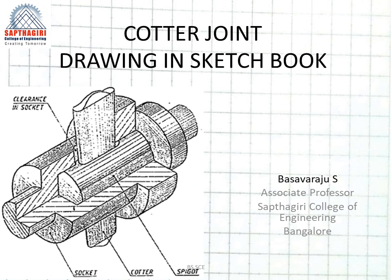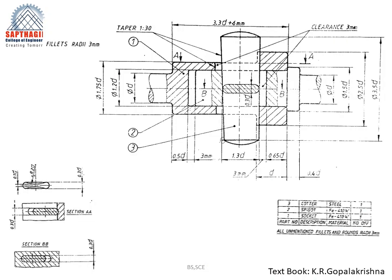Hello everyone. Today we'll see how to represent the cotter joint in a sketchbook. This cotter joint is used to connect rigidly two shafts in order to transmit motion in the axial direction. It is used where piston rods are connected with crossheads, and valve rods and the stems of the valve rod are to be connected.